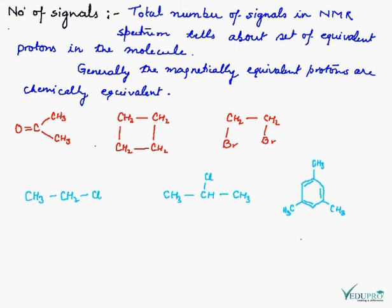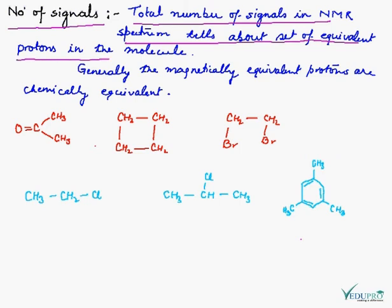Now let us see the total number of signals that arise in the NMR spectrum. The total number of signals in NMR spectrum tells about the set of equivalent protons in the molecules. The total number of signals depends on the number of chemically equivalent protons in the molecules.